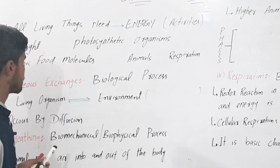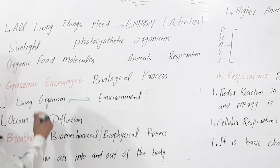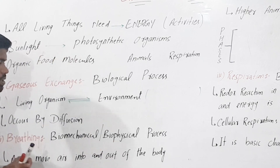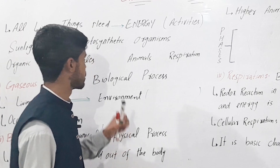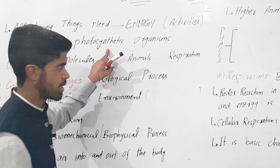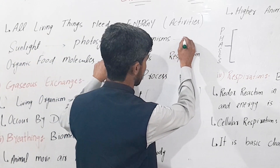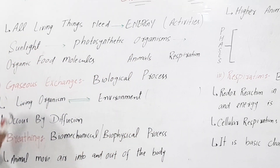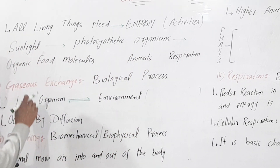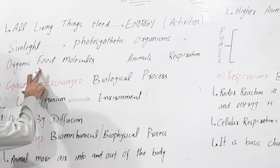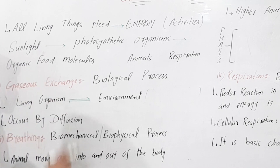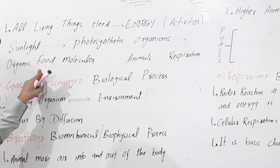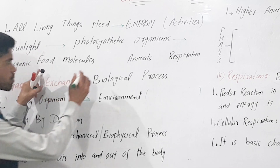The source of energy is sunlight. Sunlight is light energy. Photosynthetic organisms capture this light energy and convert it into chemical energy through the photosynthesis process using chlorophyll, producing organic food molecules such as glucose.